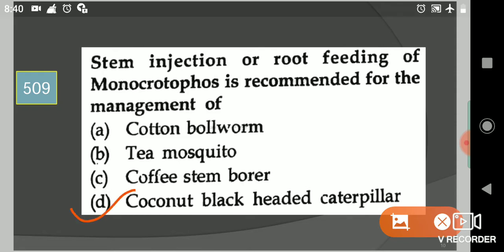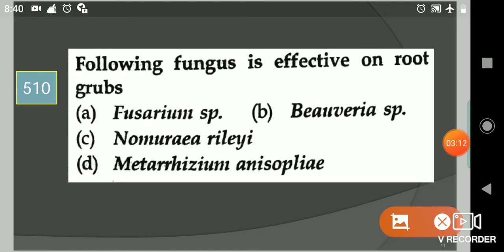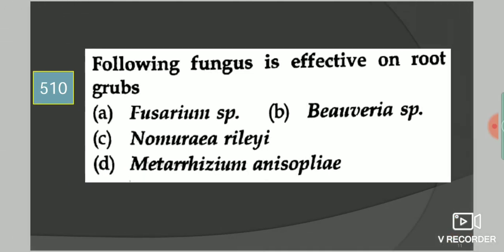Next question: Following fungus is effective on root grafts? Your options are Fusarium species, Beauveria species, Nomuraea rileyi, or Metarhizium anisopliae. Your answer is option D, Metarhizium anisopliae.